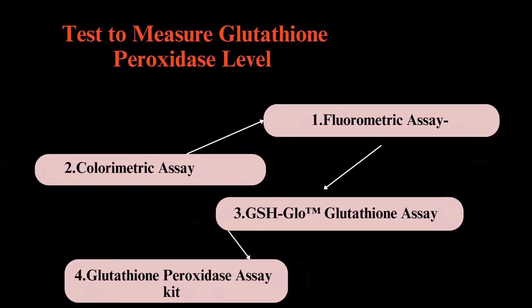Tests to measure glutathione peroxidase levels: first is the fluorometric assay, which measures glutathione peroxidase activity using a fluorescent probe. Next is the colorimetric assay, which uses a chromogenic substrate to detect glutathione peroxidase activity. The glutathione assay quantifies glutathione in cells or biological samples; changes in glutathione levels can indicate oxidative stress, which can lead to apoptosis or cell death. The glutathione peroxidase assay kit measures activity by monitoring the decrease in NADPH absorption at 340 nanometers, coupled with the oxidation of glutathione.